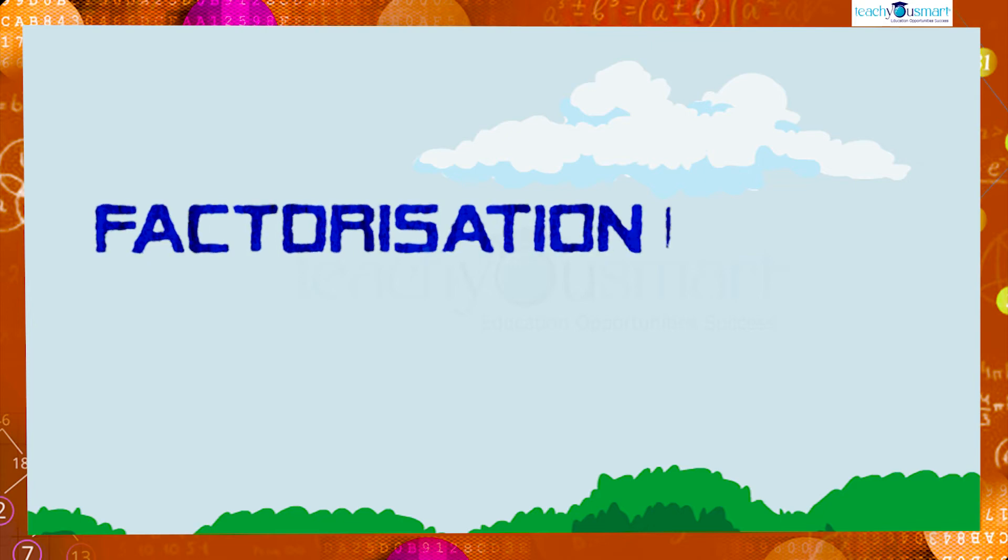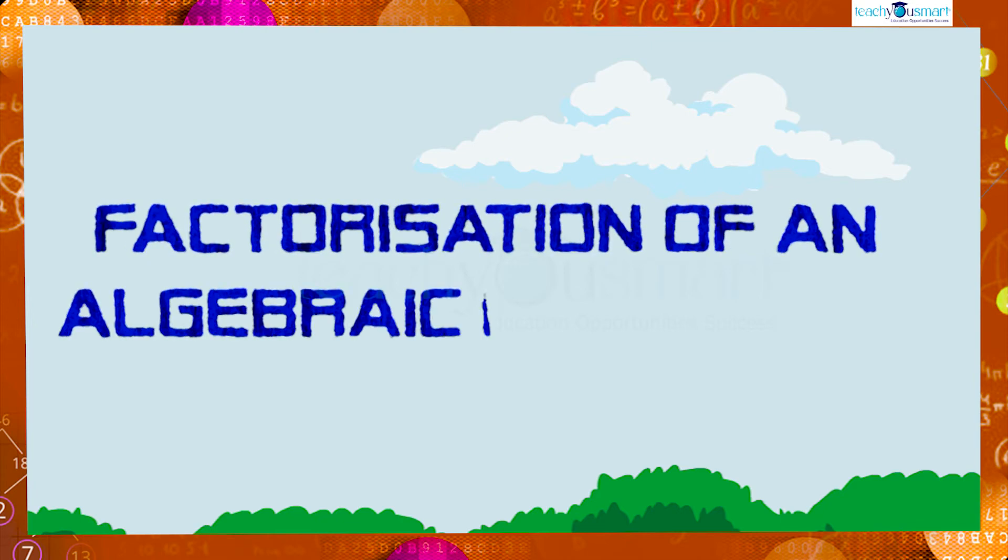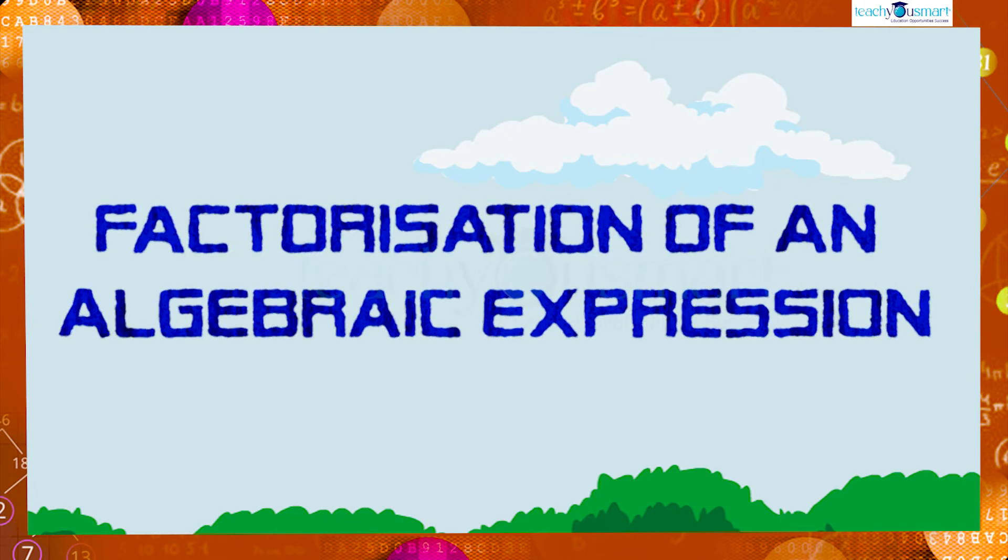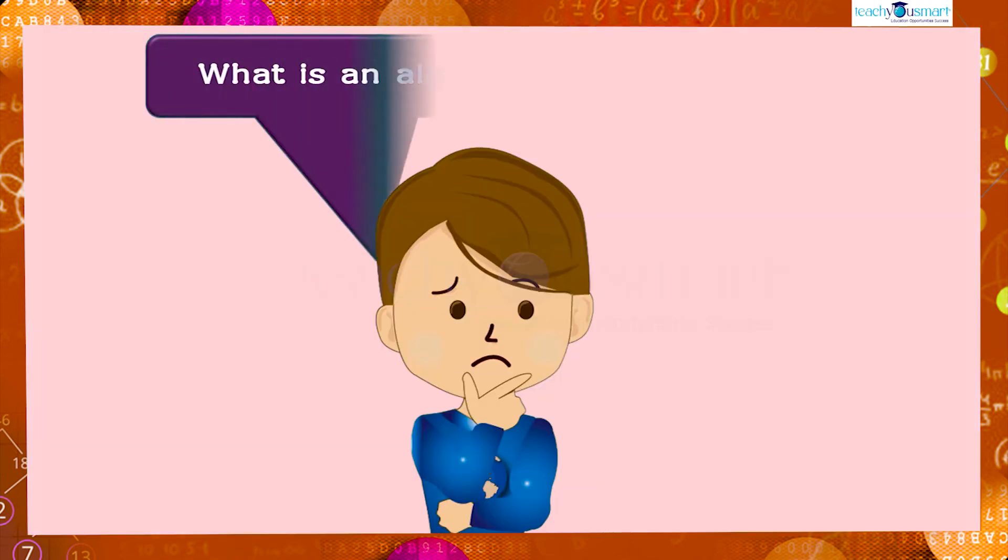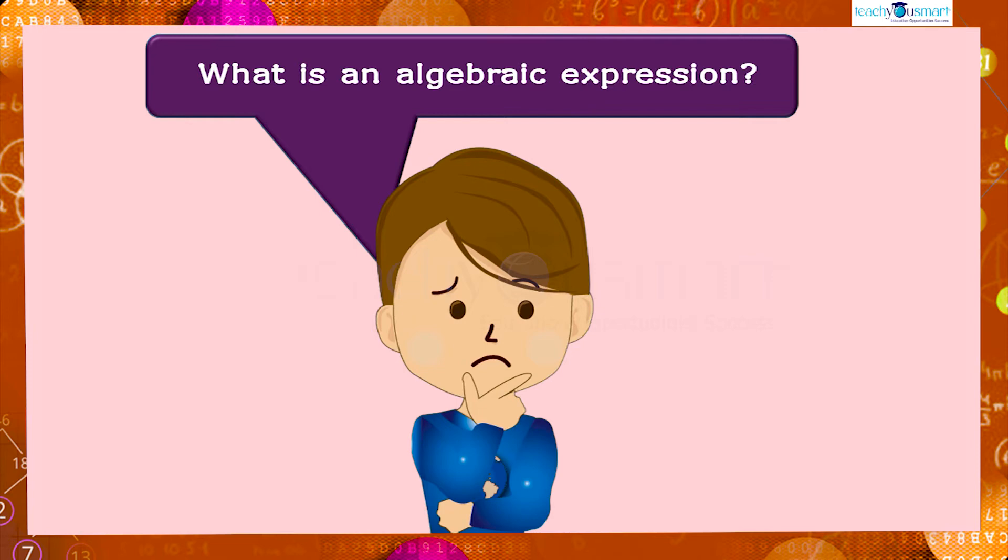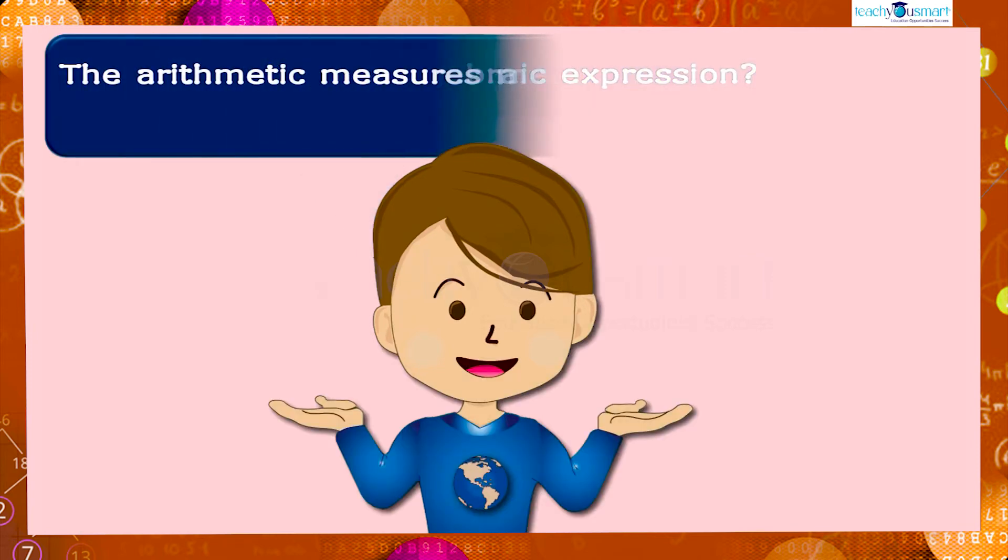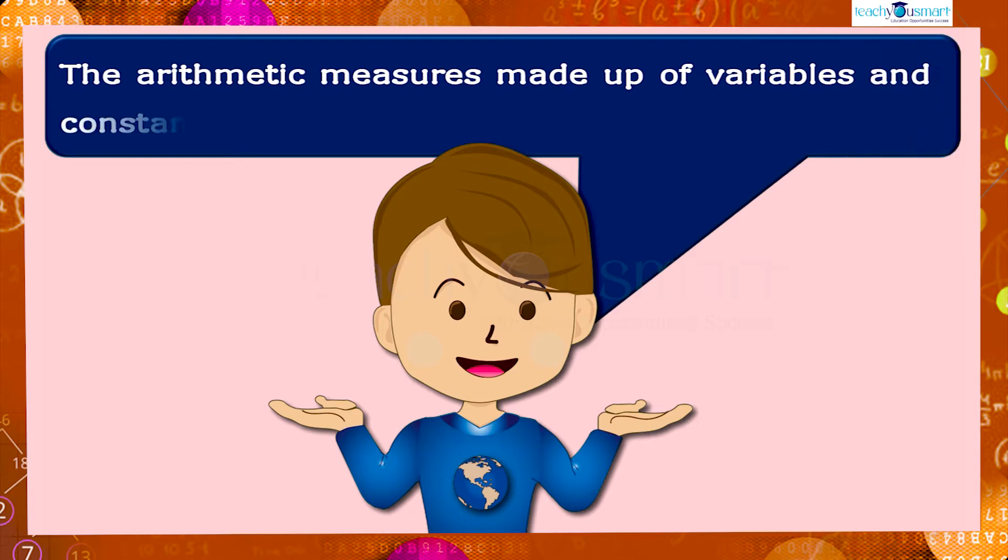Similarly, we can factorize an algebraic expression and it can be expressed as the product of its factors. Before that, can you say what is an algebraic expression? Yes, the arithmetic measures made up of variables and constants are called algebraic expressions. We discussed the details in the chapter Algebraic Expressions and Identities.